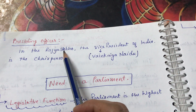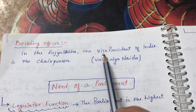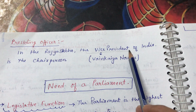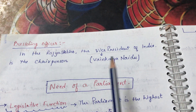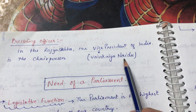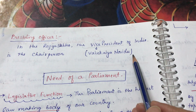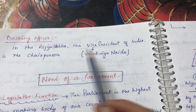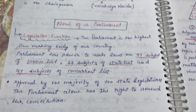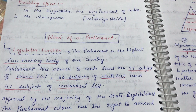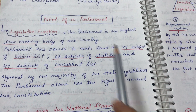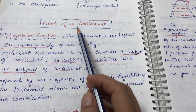The presiding officer of the Rajya Sabha is the Vice President of India. The Vice President is the Chairperson of the Rajya Sabha. At the time of recording, Venkaiah Naidu is our Vice President and presiding officer of Rajya Sabha.